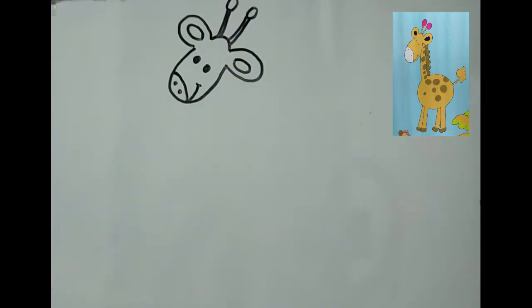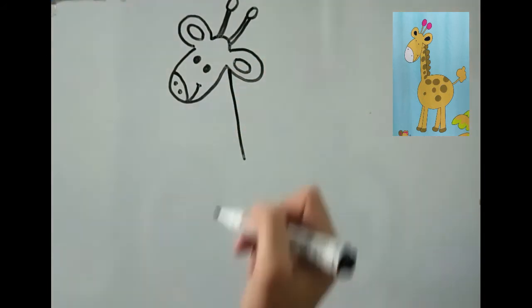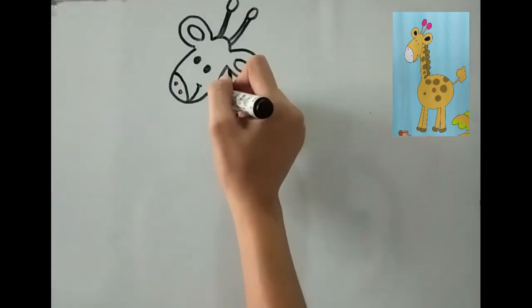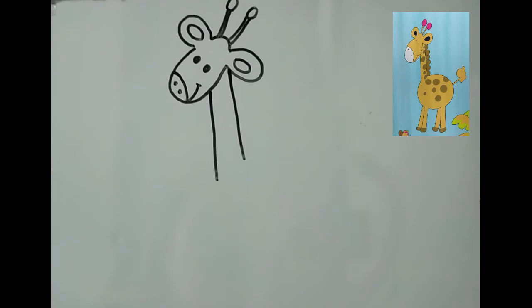Okay, so that's the face. Now let's make the neck, just make a going down line. You can make it longer if you have space. Nice. Now for the body, let's just make an oblong.